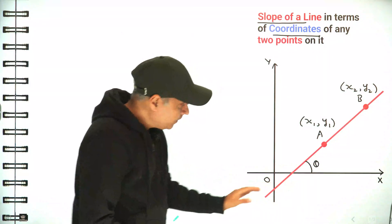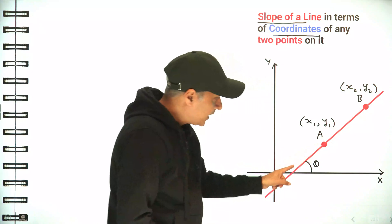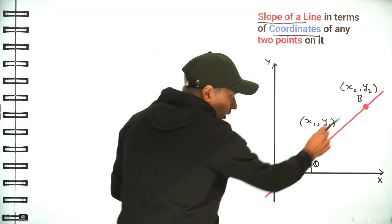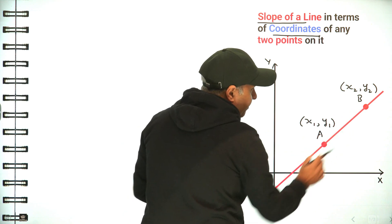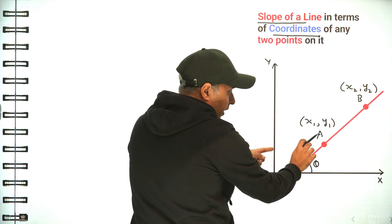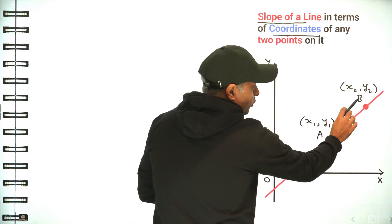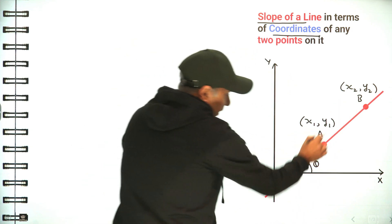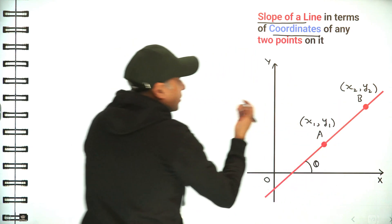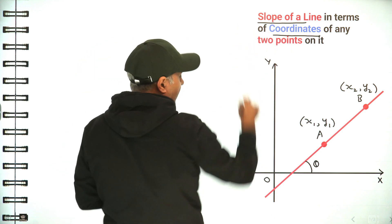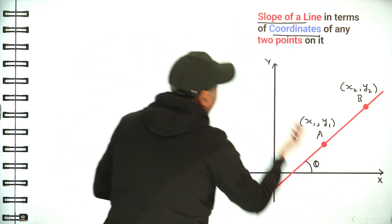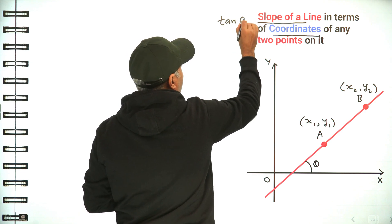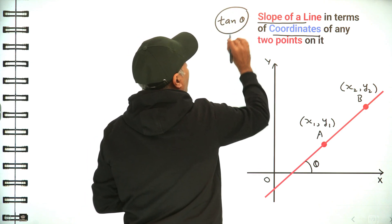In this coordinate plane, there is a straight line making angle theta with the x-axis, and we have taken two points on it, A and B. The coordinates of A are (x1, y1) and the coordinates of B are (x2, y2). Since the line makes angle theta with the x-axis, the slope of the line is tan(theta).